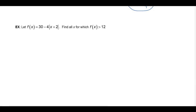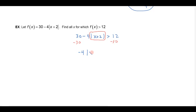Let's go to the last example. This is posed using function notation — I have a function with an absolute value in it, and I'd like to know where that function is greater than 12. So let's write 30 minus 4 times the absolute value of x plus 2 greater than 12. The first thing I want to do is isolate the absolute value. Subtracting 30 from both sides gives negative 4 times the absolute value of x plus 2 greater than negative 18. And don't forget that if you divide or multiply by a negative, you have to reverse the inequality.